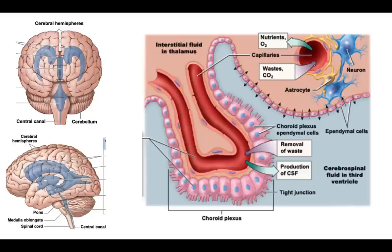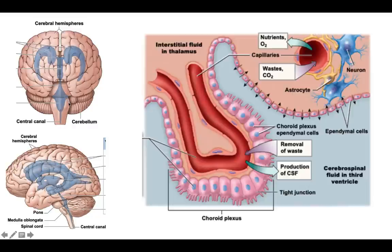Cerebrospinal fluid supports the brain, cushions the neural tissue, and transports nutrients to exposed neural tissue. It circulates through the ventricles — from the lateral ventricles into the third ventricle, then the fourth ventricle, then into the central canal of the spinal cord. It also leaves the fourth ventricle into the subarachnoid space and travels all the way around the spinal cord and around the brain.